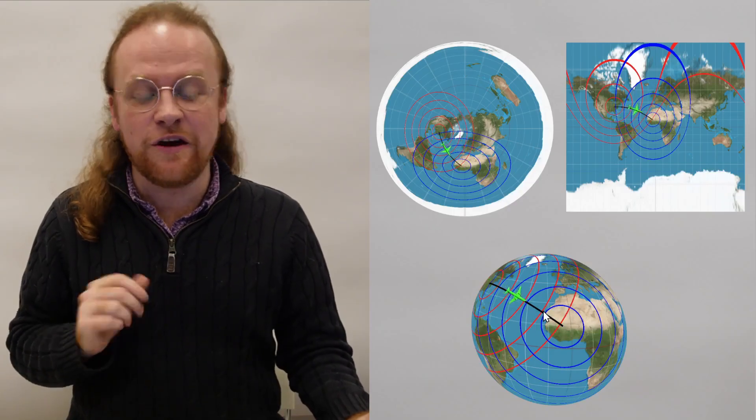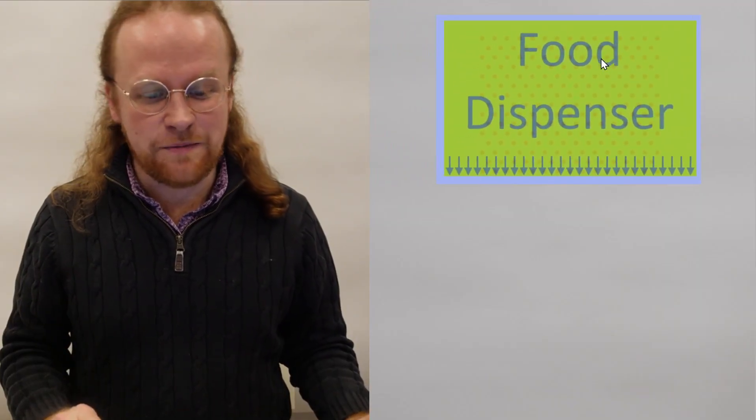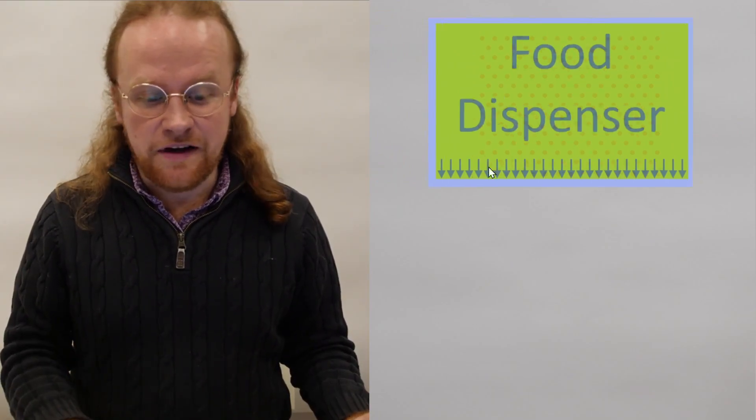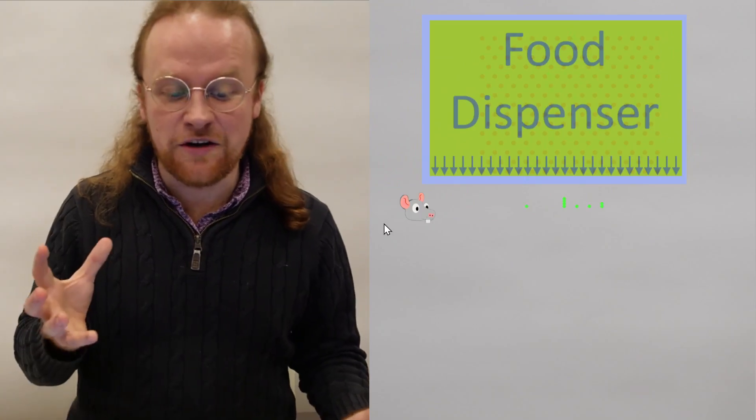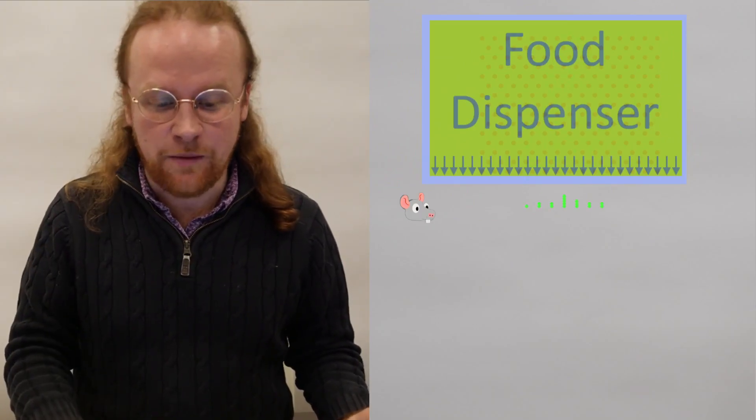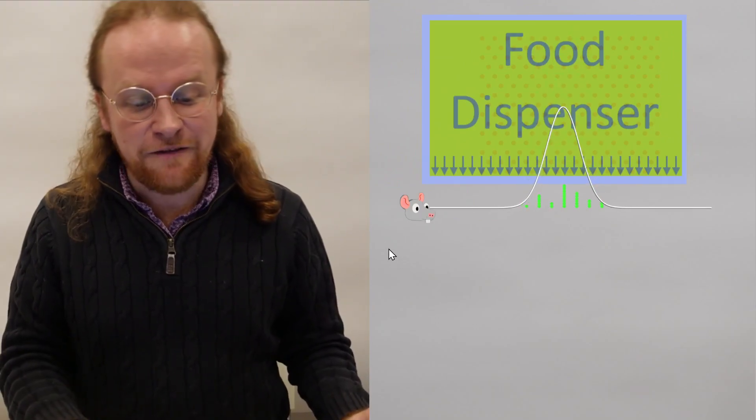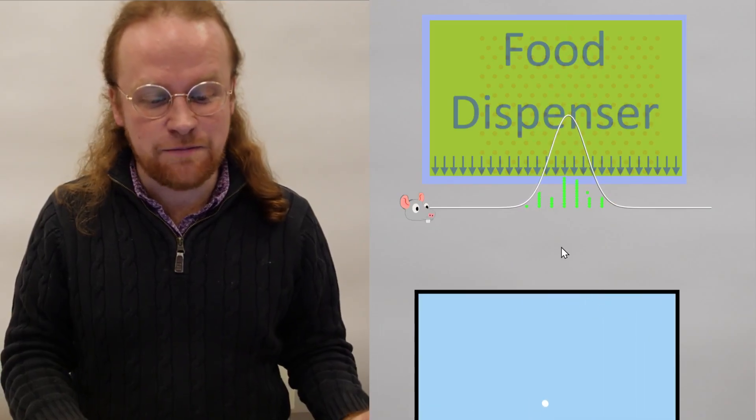Let's work up to an example of a belief space though. Here is a device that is putting out food. Here is a rat that is very much wanting to know where the next piece of food will come out. Here is the rat belief and here is the rat belief space.